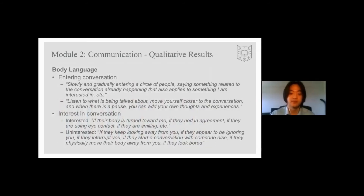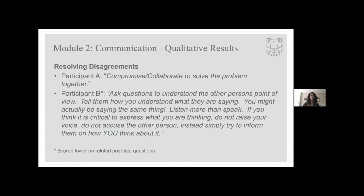Looking at qualitative responses, both participants demonstrated a great understanding of body language and how to use it to enter a conversation or gauge interest. One student said that people are interested in the conversation if their body is turned towards them, if they're nodding in agreement, if they're using eye contact, if they're smiling. These answers show that students have at least a conceptual understanding of how to use and interpret body language. Students also demonstrated understanding of how to resolve disagreements through compromise and active listening. Interestingly, participant B scored more poorly on post-test quantitative questions for this topic than the pre-test, yet had a much more thorough written response demonstrating competency — suggesting conceptual understanding but perhaps a lack of confidence in that understanding.